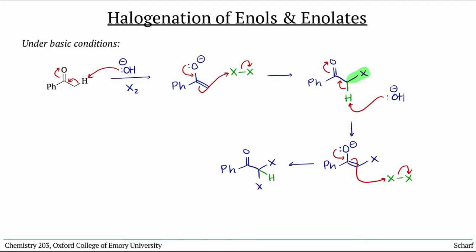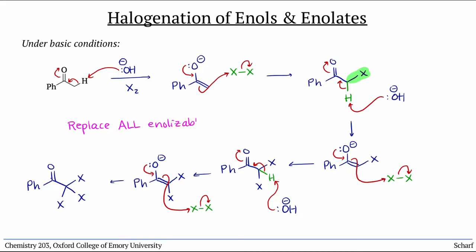If there are any more enolizable protons, we keep going. A third deprotonation gives yet another enolate, which reacts with X2 yet again. We completely halogenate all of the alpha protons. That is, under basic conditions, we replace every enolizable proton with a halogen.